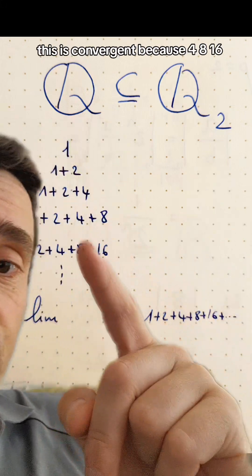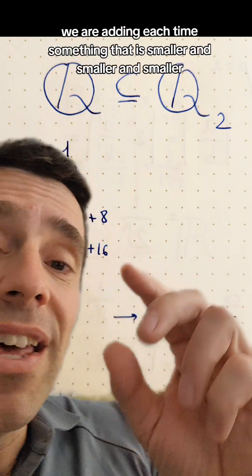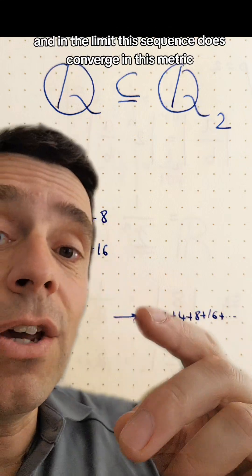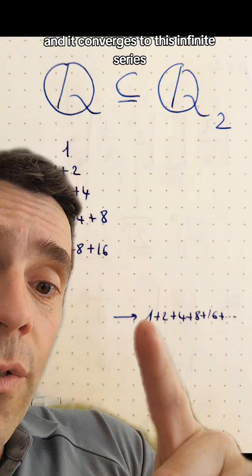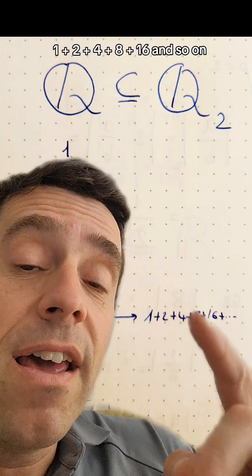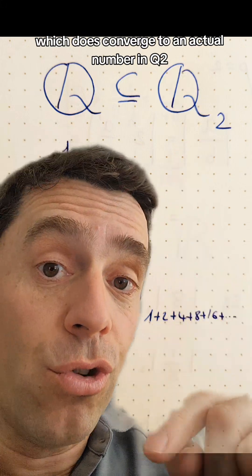However, in the 2-adic, this is convergent because 4, 8, 16, we are adding each time something that is smaller and smaller and smaller. And in the limit, this sequence does converge in this metric. And it converges to this infinite series, 1 plus 2 plus 4, 8, 16, and so on, which does converge to an actual number in Q2.